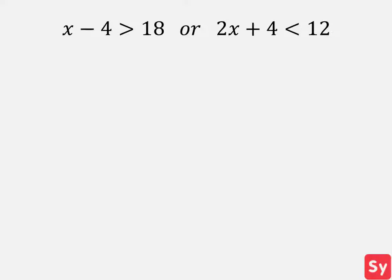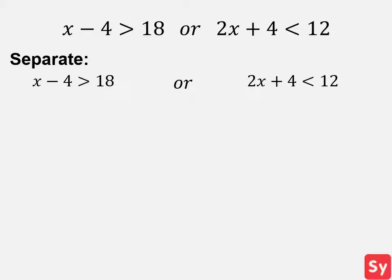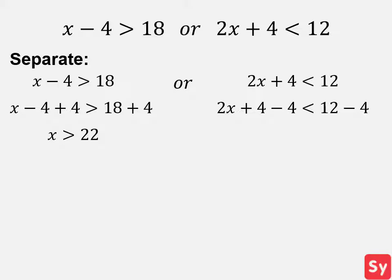For the last example, we have x minus 4 is greater than 18, or 2x plus 4 is less than 12. First, we separate the inequalities into 2: x minus 4 is greater than 18, or 2x plus 4 is less than 12. We solve x minus 4 is greater than 18 by adding 4 to each side, giving us x is greater than 22. For the next inequality, we subtract 4 from each side, simplify to get 2x is less than 8, then divide each side by 2 and get x is less than 4.